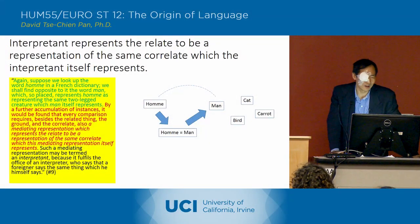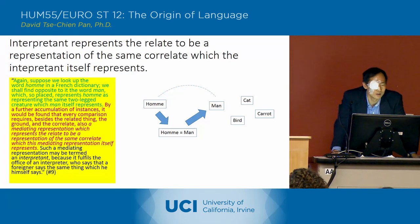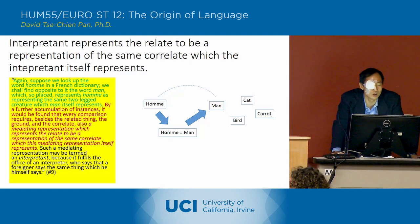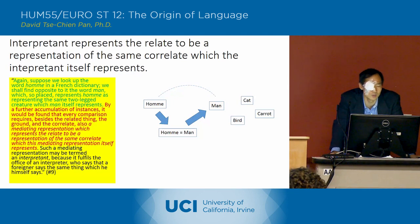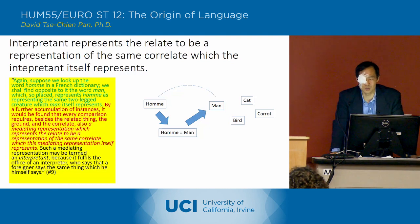He's got another example, and in this example he's talking about — I'll just read it. Suppose we look up the word 'homme' in a French dictionary, we shall find opposite to it the word 'man', which so placed represents 'homme' as representing the same two-legged creature which 'man' itself represents. So that's the example — this translation of the word 'homme' to 'man'. We've got homme equals man.